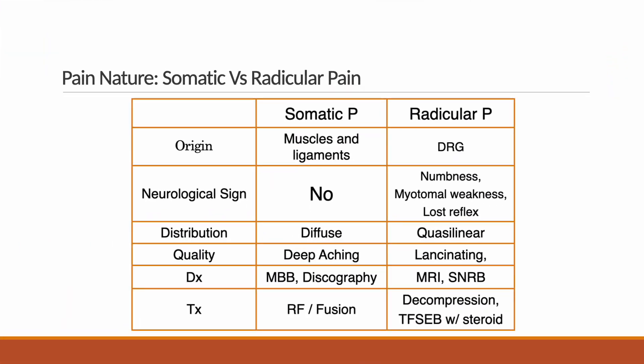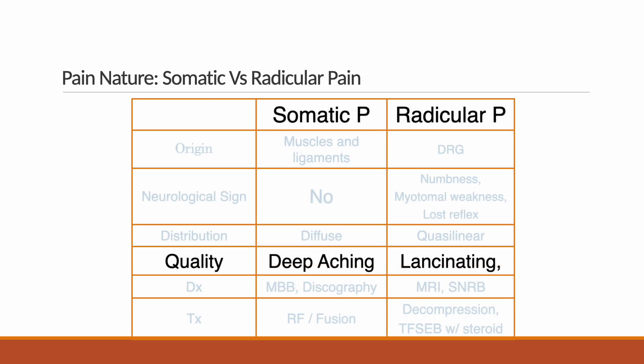Spinal pain divides into somatic and radicular pain according to pain generators. Somatic pain originates from somatic structures such as discs, facet joints, ligaments, and muscles. Radicular pain arises from the dorsal root ganglion and nerve root. I cannot deliver the exact word of pain expression for each pain generator because of diverse pain language internationally, but usually somatic pain shows characters of deep aching and vague referred pain.